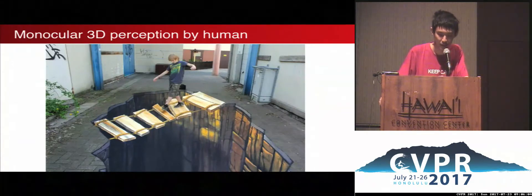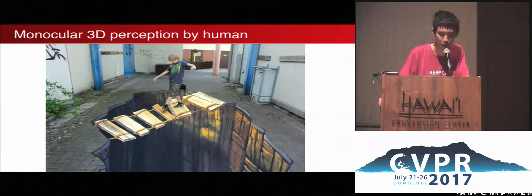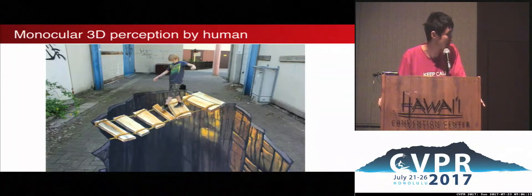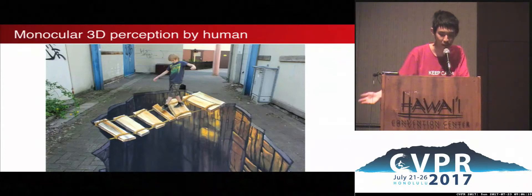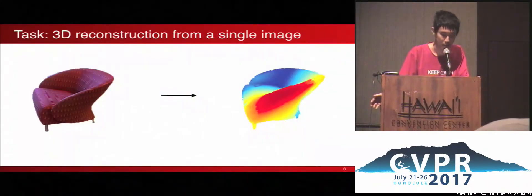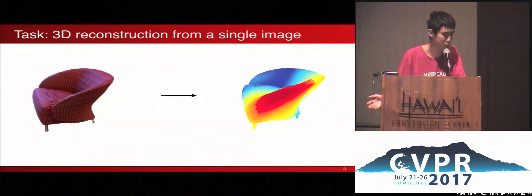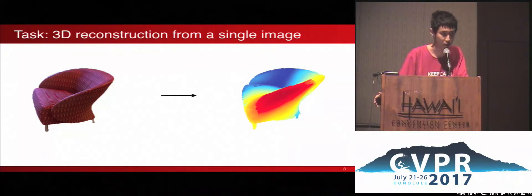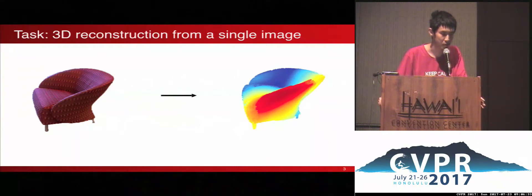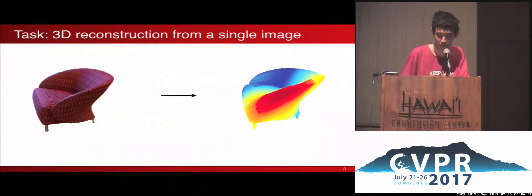Look at this picture. What can you see? As a human, we have the innate ability of monocular 3D perception. We not only see the 2D configurations in the figure, but also the depth, the shape and space relationships between the entities. This is what we want our machines to do. Our task is to get a 3D reconstruction of the whole object's shape from a single image — to build internally a 3D representation of the object.